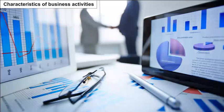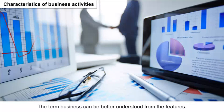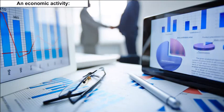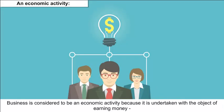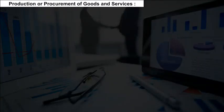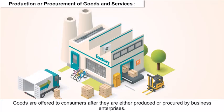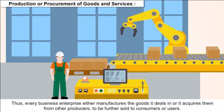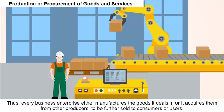Characteristics of business activities: the term business can be better understood from its features. As an economic activity, business is undertaken with the object of earning money or livelihood, and not because of love, affection, sympathy or any other sentimental reason. Regarding production or procurement of goods and services, goods are offered to consumers after they are either produced or procured by business enterprises.